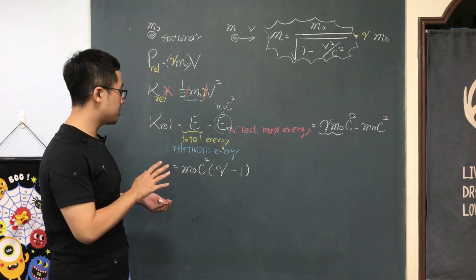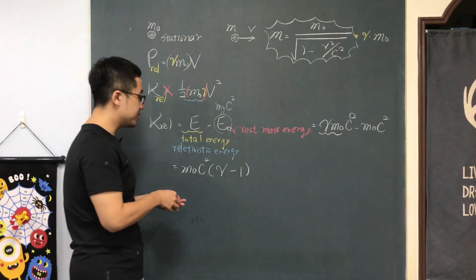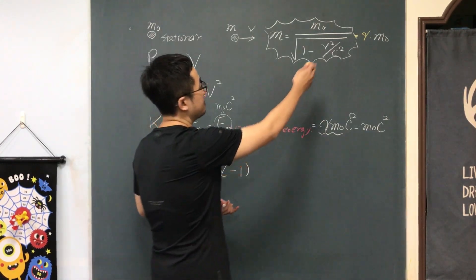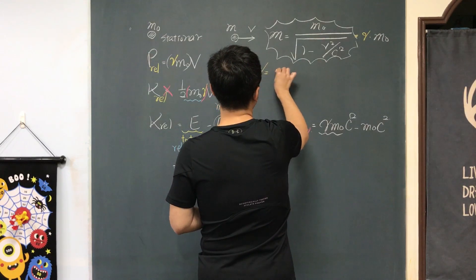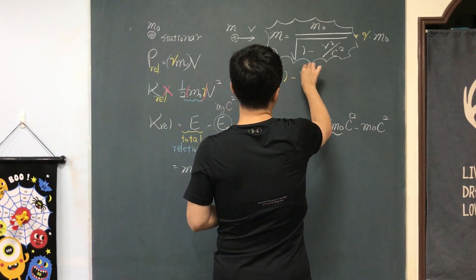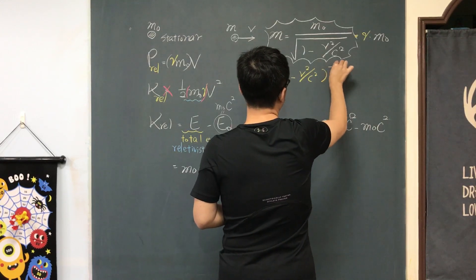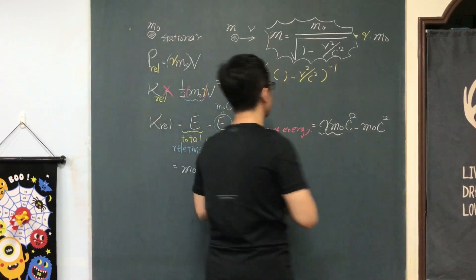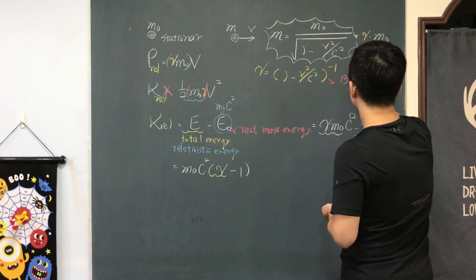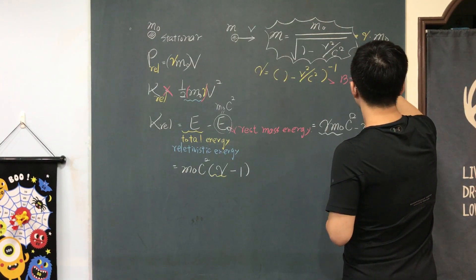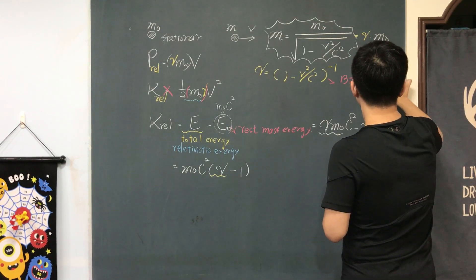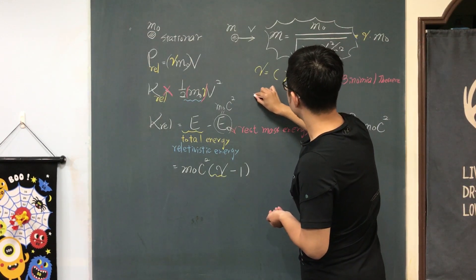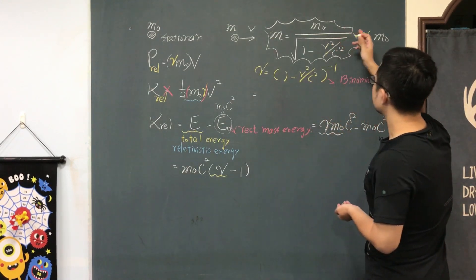Now comes the hardest part. I need to expand gamma in a series. Gamma is 1 over the square root of 1 minus v² over c², which equals (1 minus v²/c²) to the power of negative one-half. I'm going to expand this term using the binomial theorem.